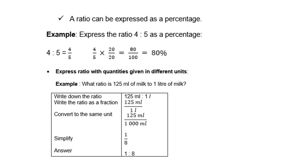Express ratio with quantities given in different units. Example, what ratio is 125 milliliters of milk to 1 liter of milk? So it's different units, so we need to convert. You need to convert milliliters to liters by dividing by a thousand. So 125 divided by a thousand gives you 1 eighth. So therefore, the ratio is 1 is to 8.